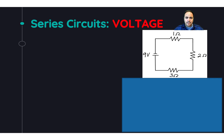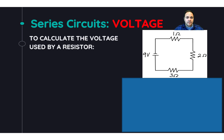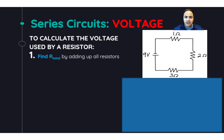If we want to know exactly how much voltage a resistor uses, we can follow a few quick steps. Start by finding the total resistance in the circuit — just add up all the resistors. In our example, we have a nine-volt battery hooked up to a circuit with three resistors: one ohm, two ohms, and three ohms. The total resistance is the sum of all those resistors, which is six ohms.